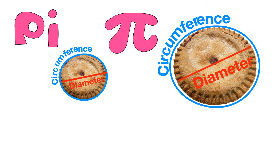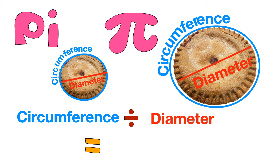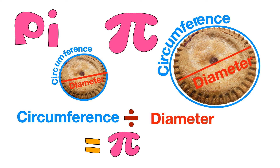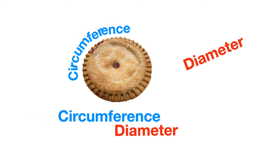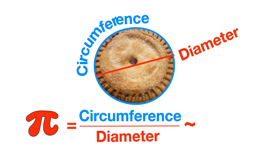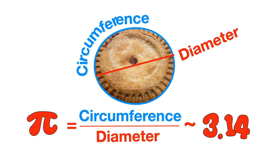As I mentioned before, Pi is the ratio between the two — the circumference and diameter. Pi equals circumference divided by the diameter. Regardless of the circle's size, this ratio will always equal Pi — approximately 3.14. In other words, circumference is approximately 3.14 times bigger than diameter.